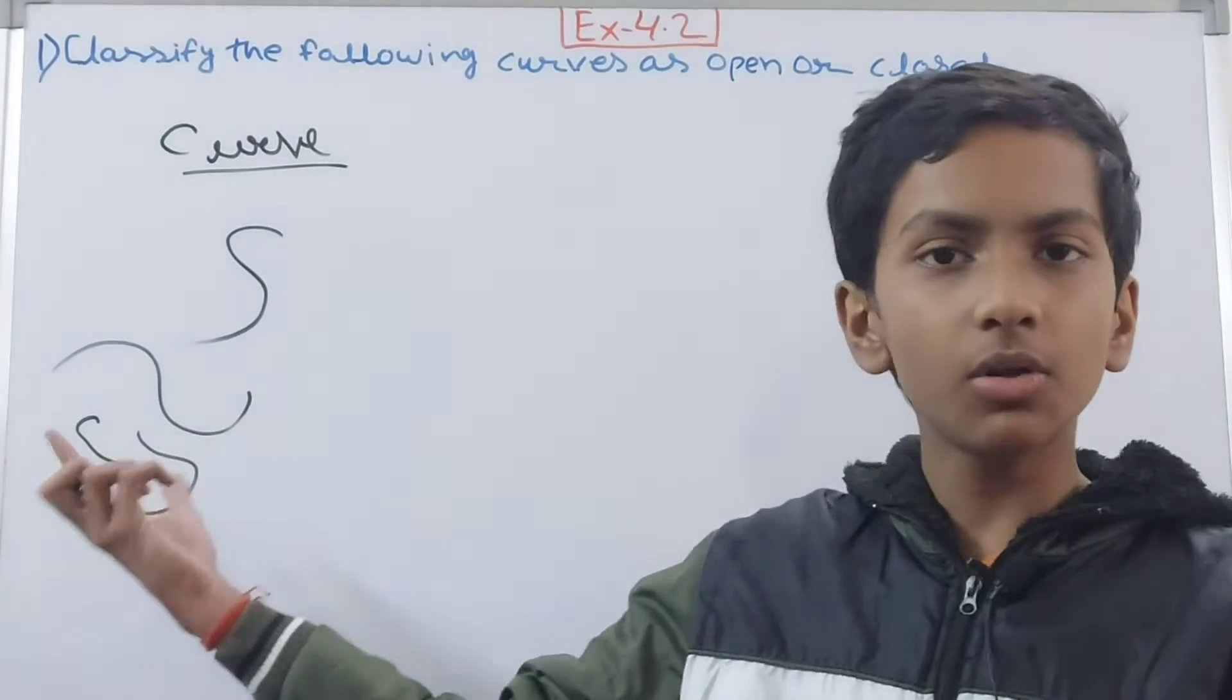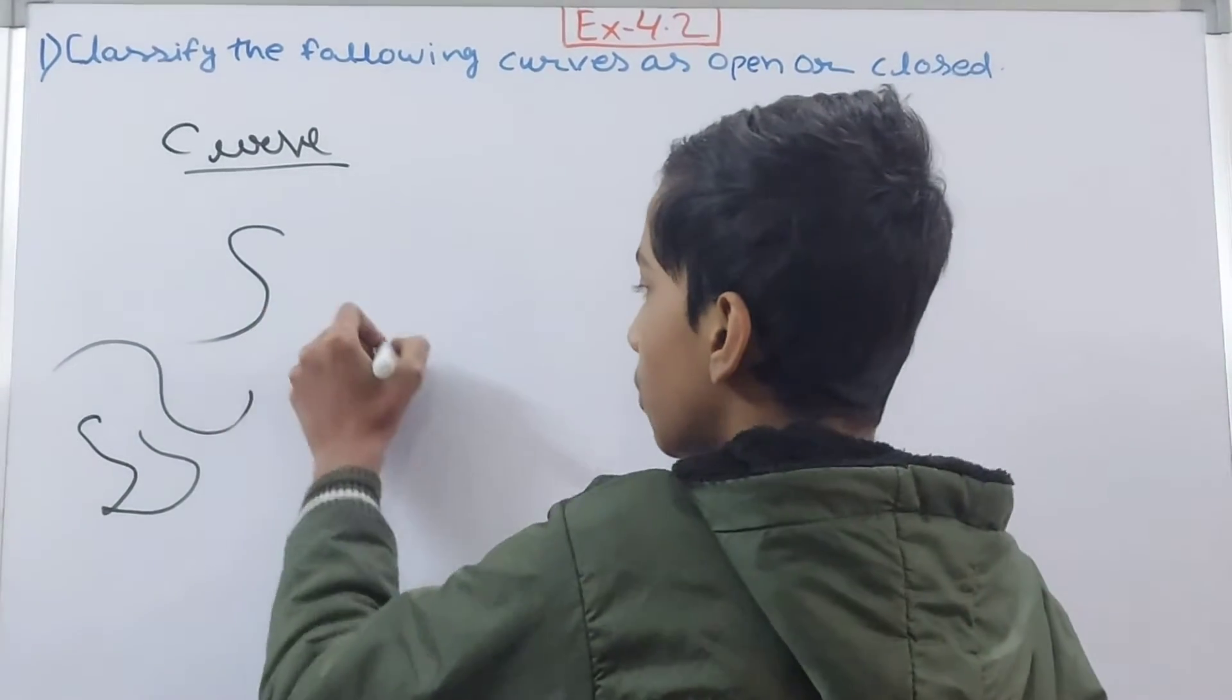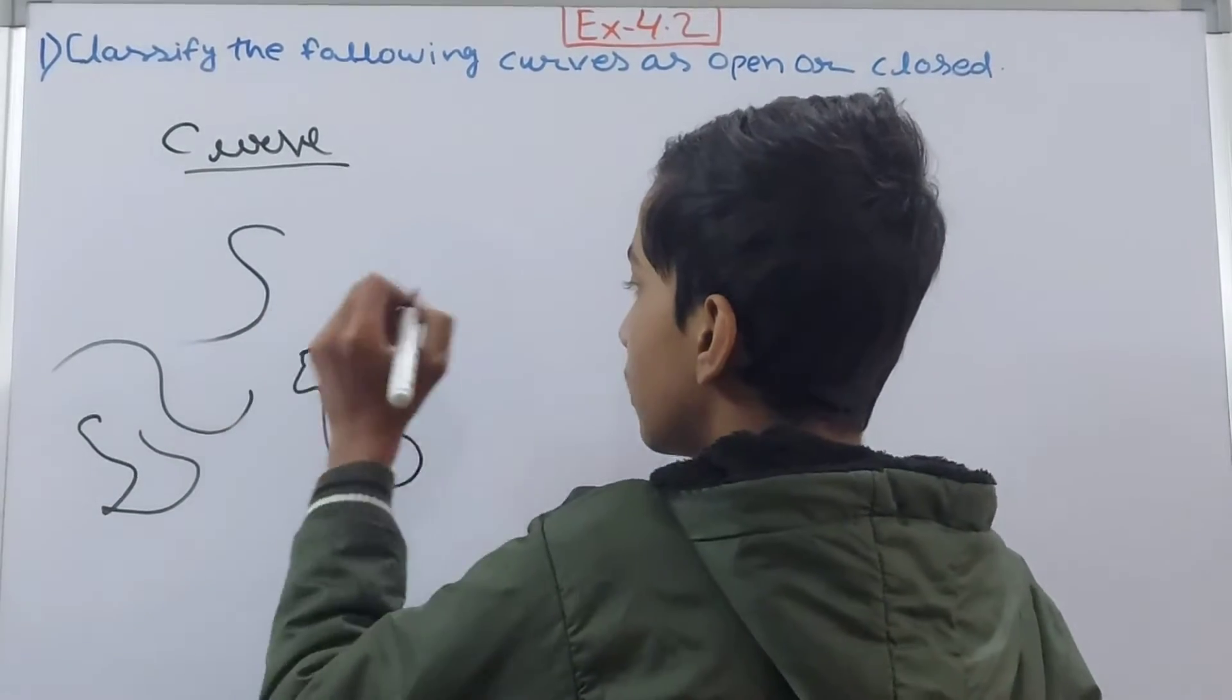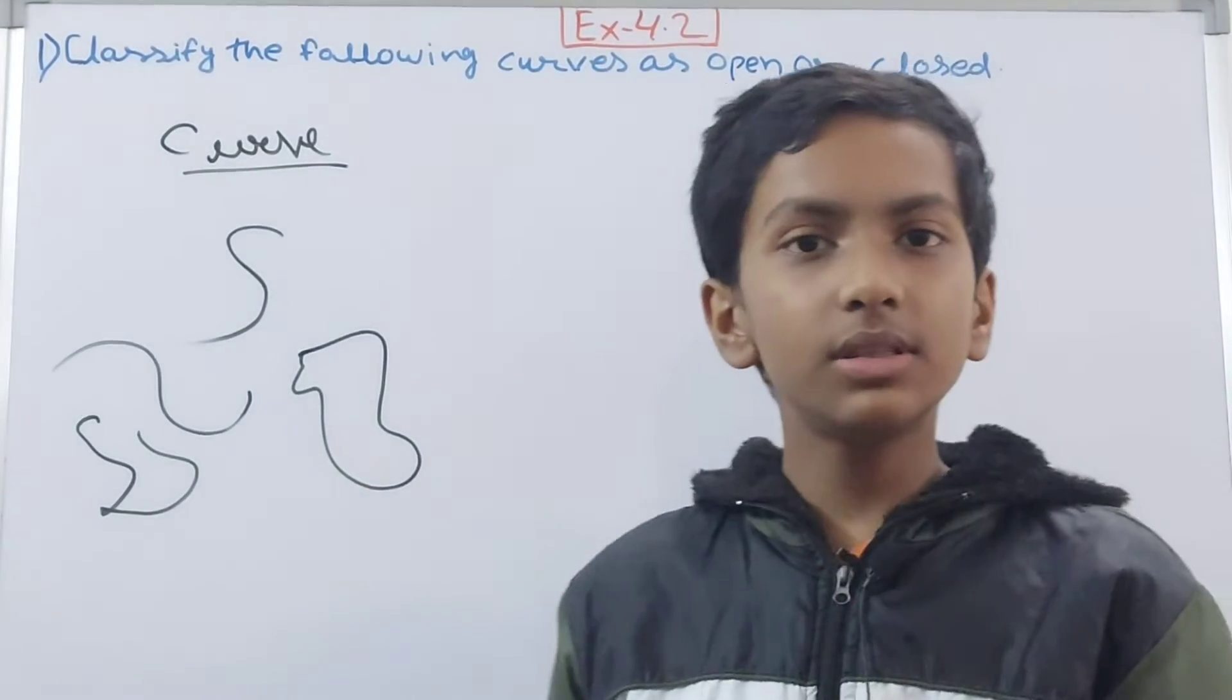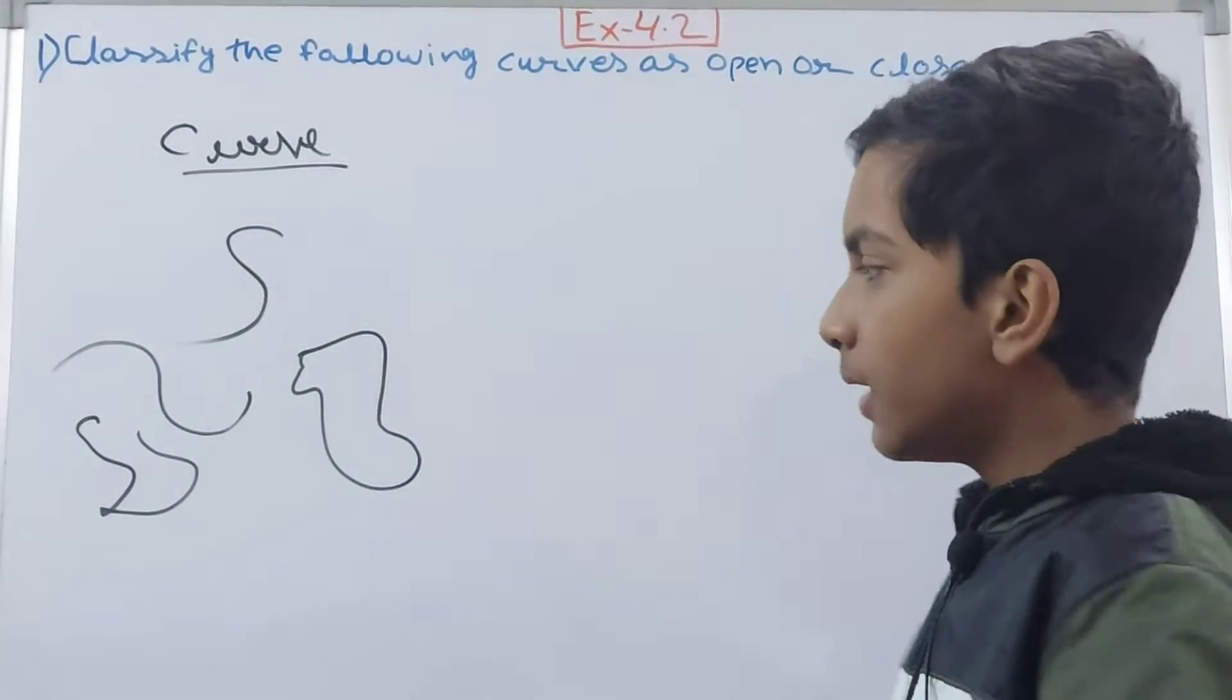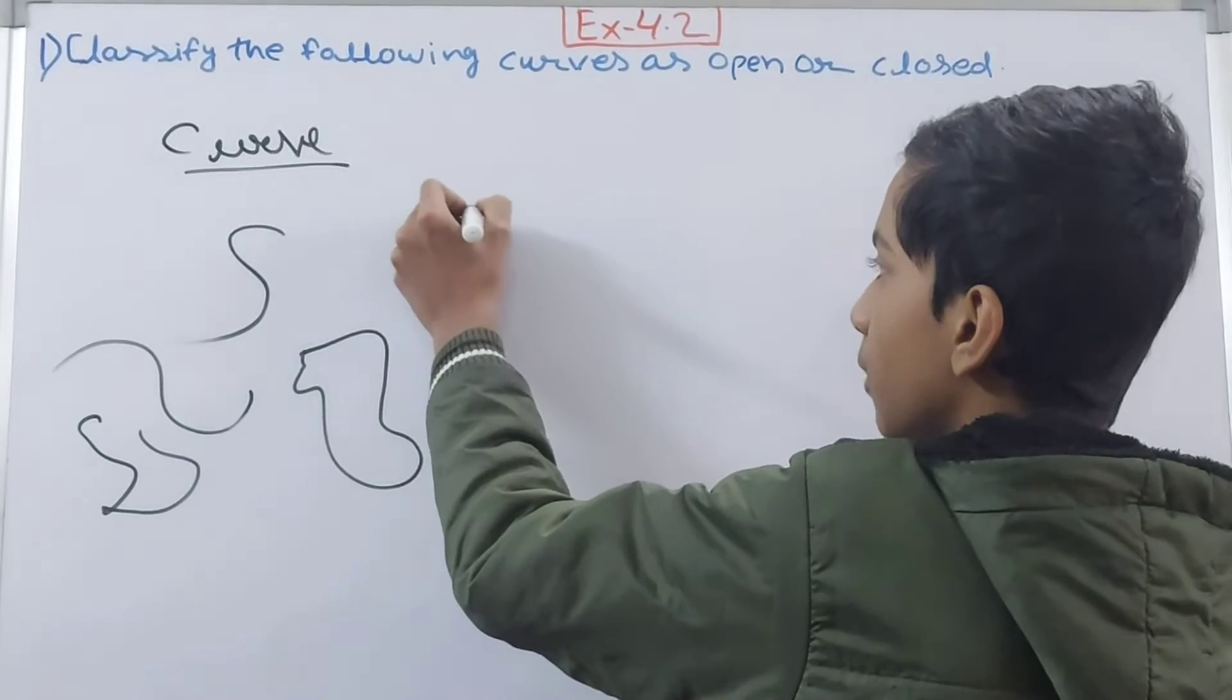So all of this you see, it is not straight. Anything you want to draw like this, this is also not straight. So this is what a curve is.